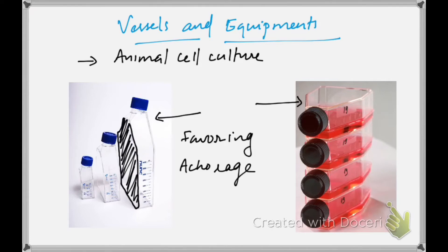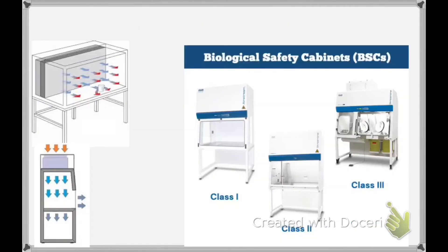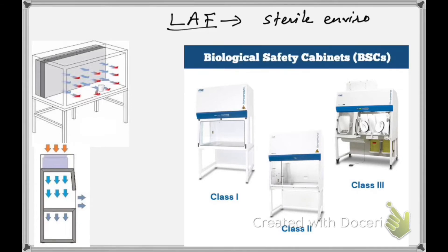Next we have a discussion on LAF — Laminar Air Flow. This laminar air flow provides a sterile environment for animal cell culture work. There are three types of laminar air flow cabinets. In Class 1, this is the direction of movement of air.